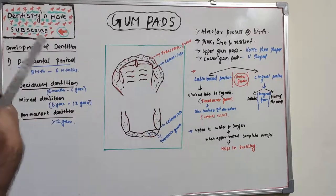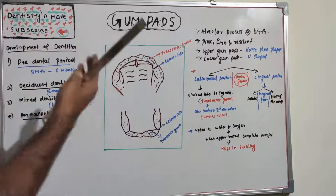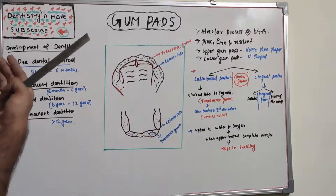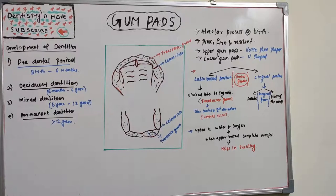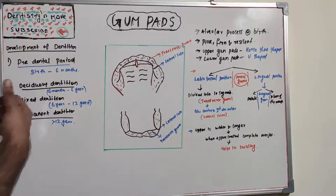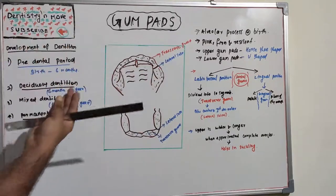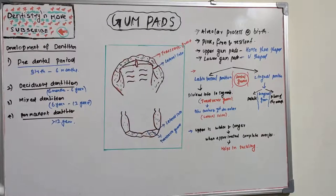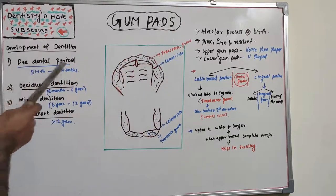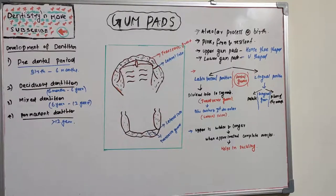Various conditions are associated with gum pads, which we have covered in previous sessions: natal teeth, present at birth; neonatal teeth, erupting within 30 days; Epulis; Epstein pearls; and bone nodules. These involve cyst formation at the mid-palatine raphe and over the alveolar mucosa. Riga-Fede disease is also associated with alveolar gum pads — it is an ulceration on the ventral surface of the tongue caused by the sharp edges of natal and neonatal teeth. Eruption cysts are also seen. All these occur during the pre-dental period, from birth to six months.